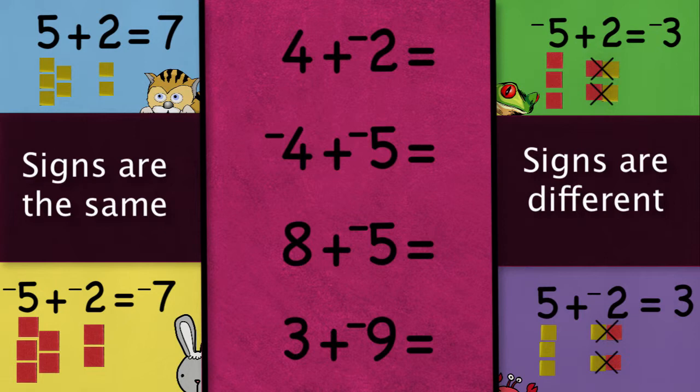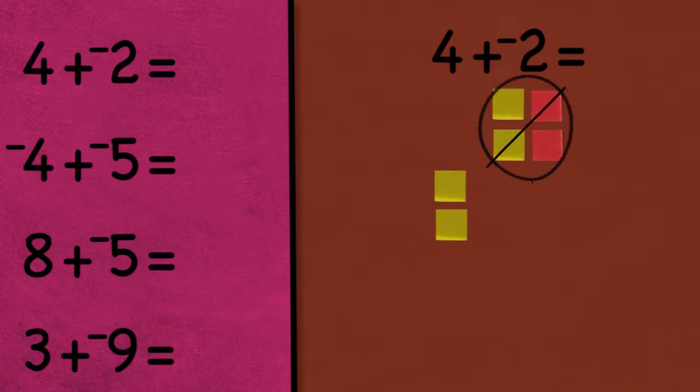Now let's look at the problems you just did. I'm going to quickly solve these problems so you can check your work. So 4 plus negative 2 is equal to 2. I noticed that the signs are different, and that I had more positives than negatives, so the answer was positive.